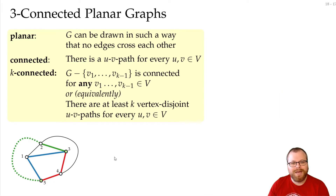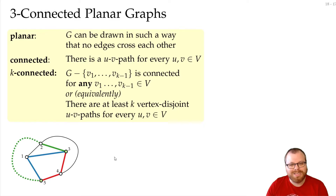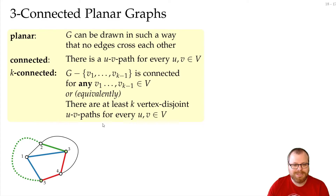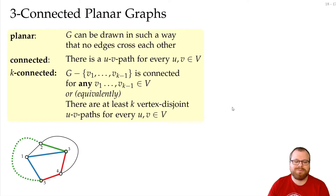In fact, if you have a degree-2 vertex, then the graph can never be 3-connected. If you have a degree K-minus-1 vertex, it can never be K-connected, because there is no way to find K vertex disjoint paths from it.